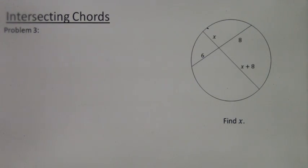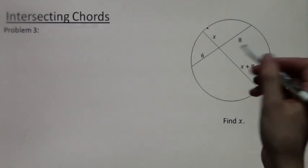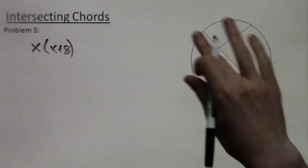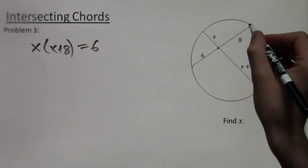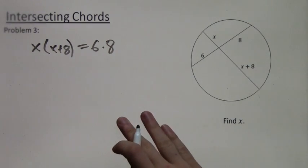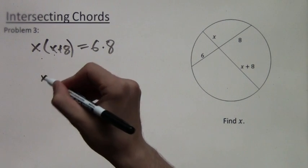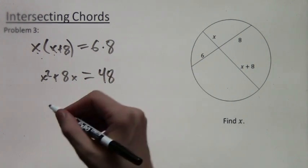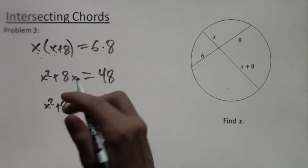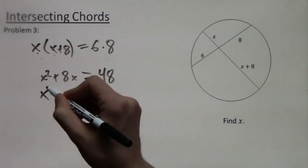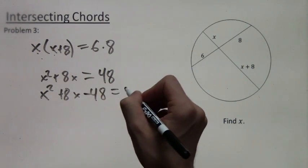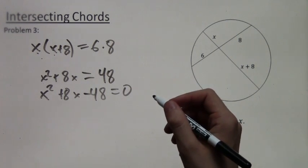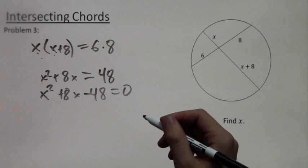Moving on to problem 3, we want to find X again. We have X times (X plus 8) on one chord, and 6 times 8 on the other. Setting them equal and multiplying out: X squared plus 8X equals 48. This gives us a quadratic equation to solve. I have several videos on solving quadratic equations, so I won't show all the work here — we'll solve this by factoring.